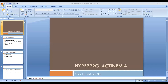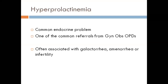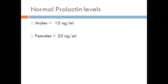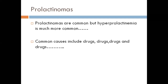Hyperprolactinemia is a common endocrine problem and a common reason for referrals from gynecology and obstetrics — patients often already have galactorrhea, amenorrhea, or infertility. Normal prolactin levels are less than 15 ng/mL in males and less than 20 ng/mL in females. A common error is to immediately think of a prolactinoma upon seeing a high prolactin, but while prolactinomas are common pituitary tumors, hyperprolactinemia itself is much more common — and one of the most common causes, especially in our setting, is drugs.